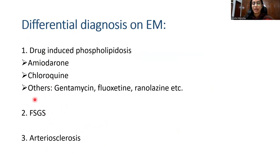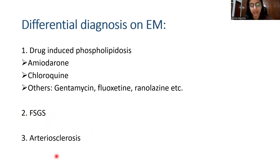FSGS in Fabry's disease can be because of the effect of lipids on podocytes as well as because of a decreased nephron mass. To differentiate it from primary FSGS, it is again important to look for cells with foamy change. Similarly, the vessel changes of hypertension can be similar to the vessel changes seen in Fabry's disease, and looking for podocytes with foamy change is crucial.